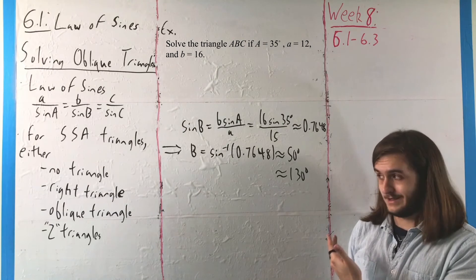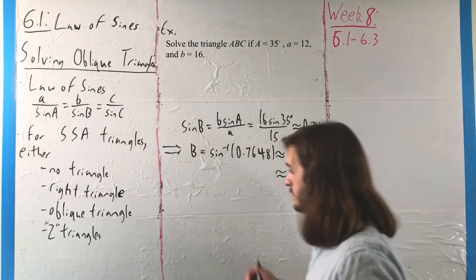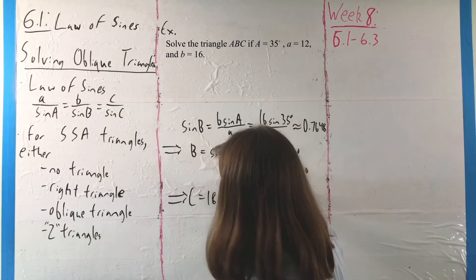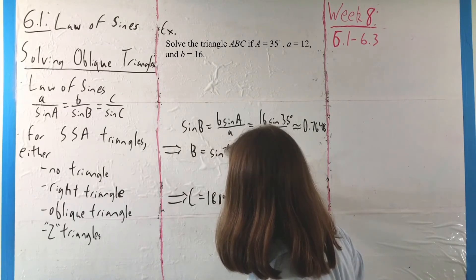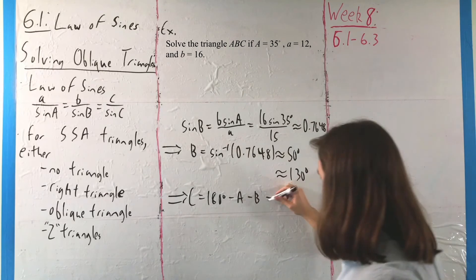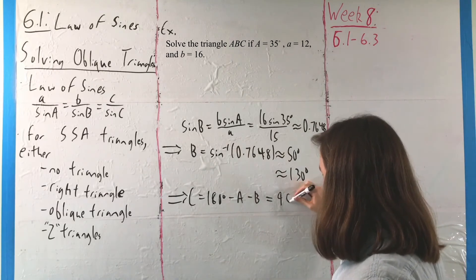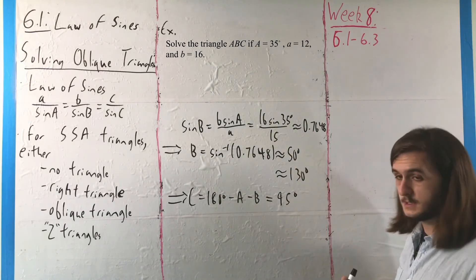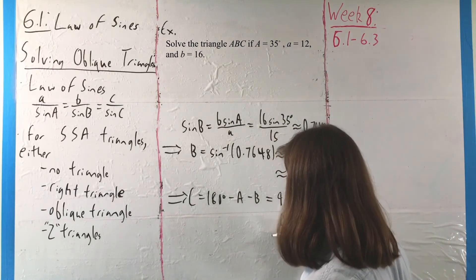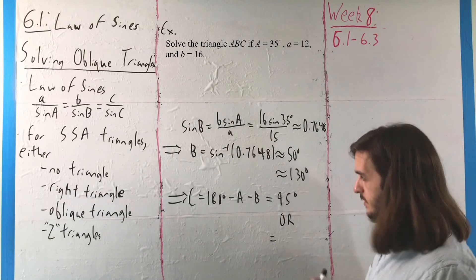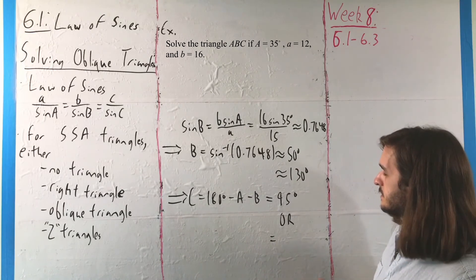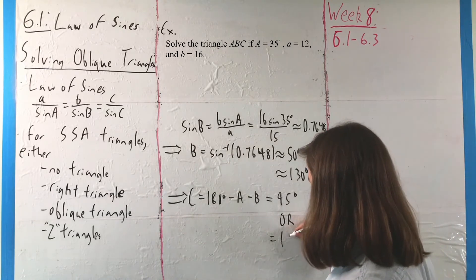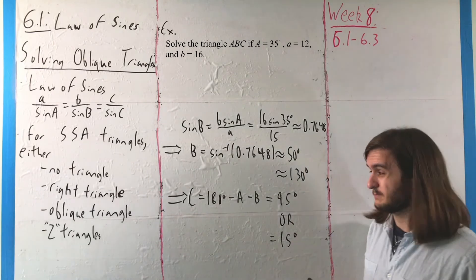And if we don't just have the one value for C, which is equal to 180 degrees minus A minus B, C can either be 95 degrees, that is 180 minus 35 minus 50, or C could also be 180 minus 35 minus 130, or 15 degrees. It's perfectly valid in either case.